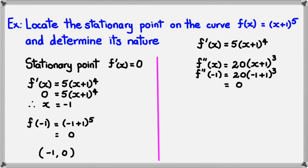Which in fact equals 0. Now, we can't be sure that this is a point of inflection just because it's 0. So we need to look at what's happening to the right and left of −1 to determine it. I'm going to do some further investigation here.